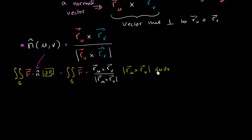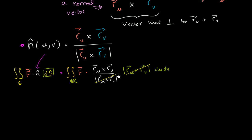The du dv could be written as dv du — you could write it as dA, a little chunk of area in the uv plane or uv domain. And since this integral is now in terms of uv, we're no longer taking a surface integral; we're now taking a double integral over the uv domain. There should be a huge simplification popping out: we're dividing by the magnitude of the cross product of those two vectors, and then multiplying by that same magnitude. So those two scalar quantities cancel out.